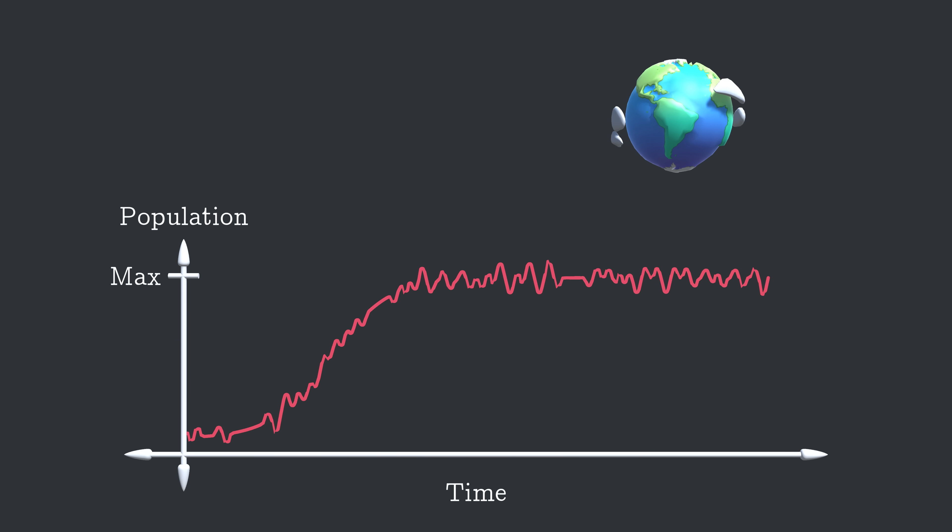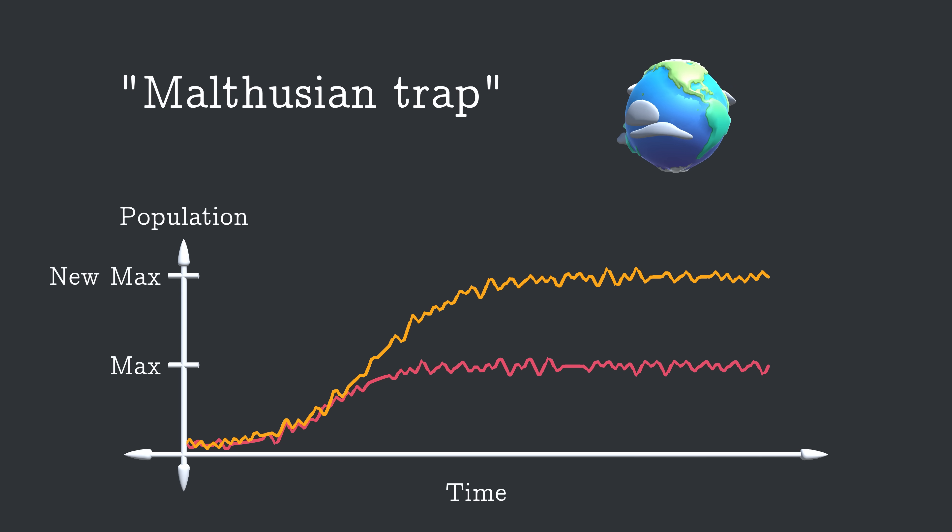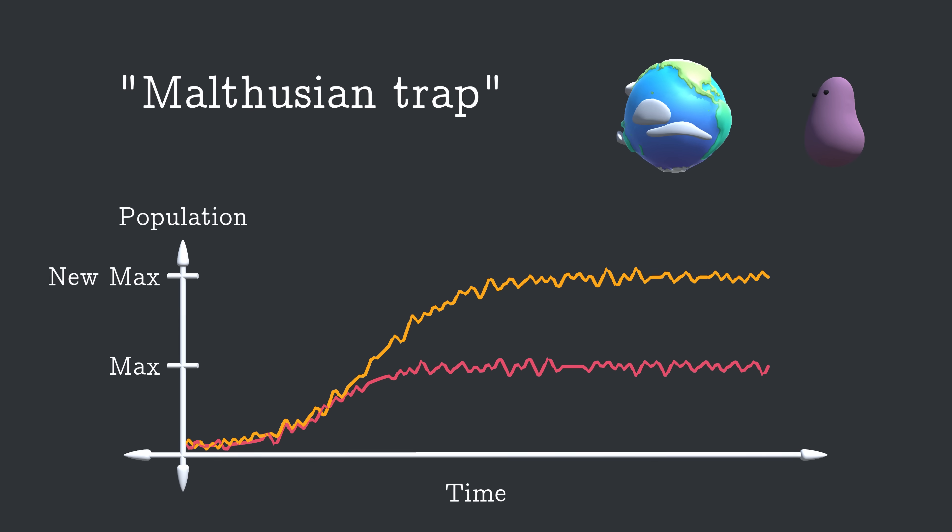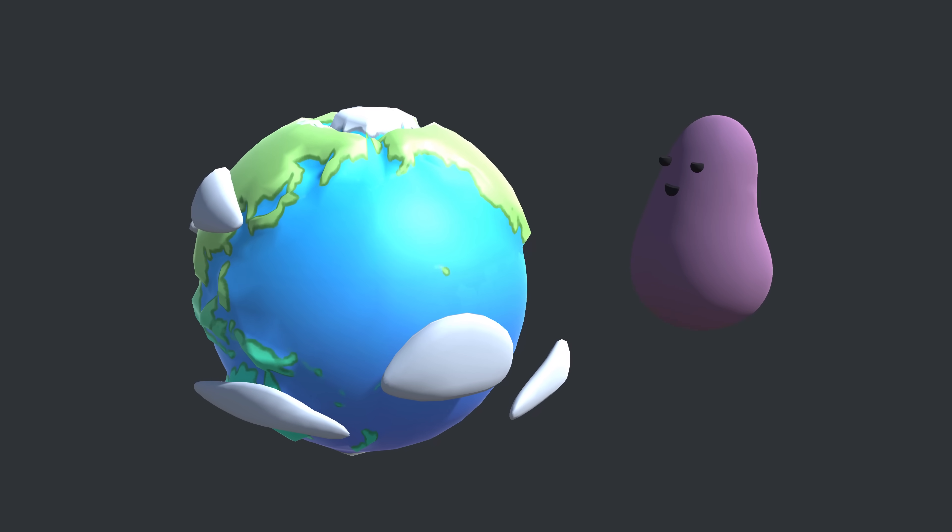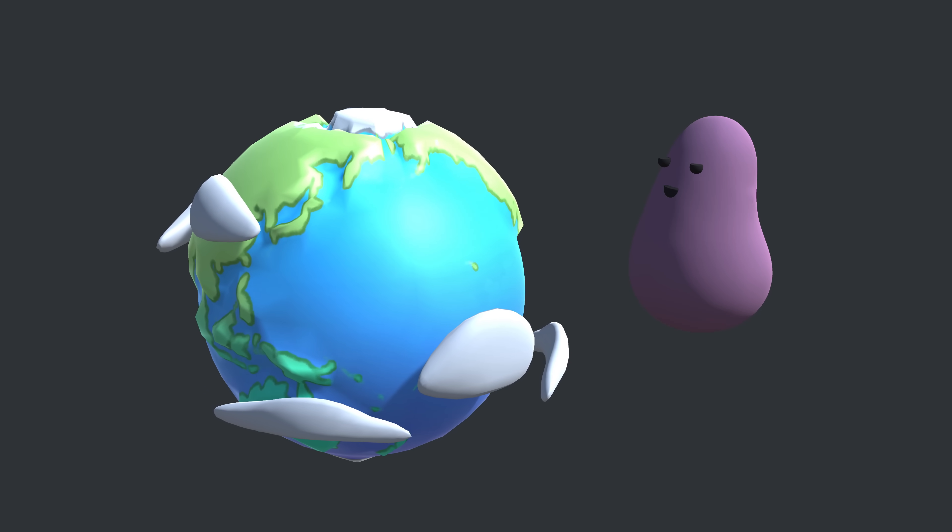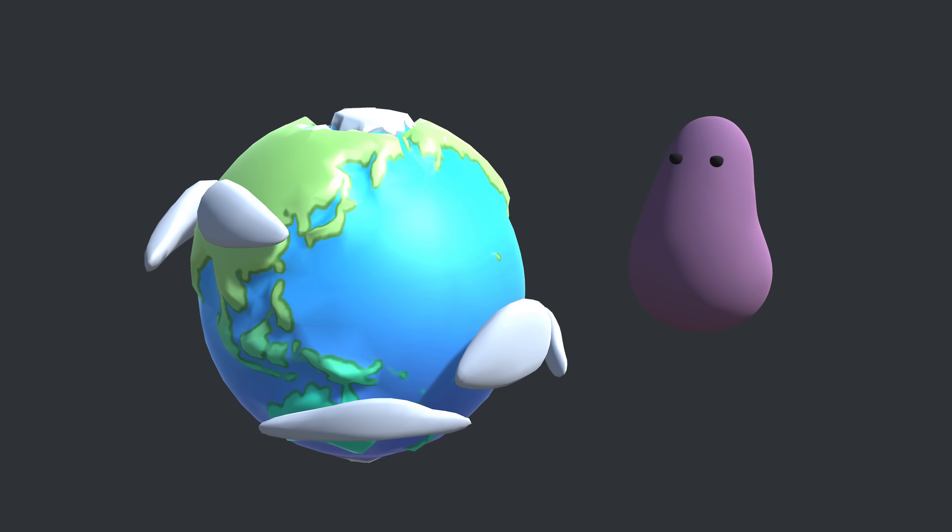Even if technology improves to let us support more life per resource, that would just increase the limit, not get rid of it. This is known as the Malthusian Trap. It's a grim picture. So grim, someone might wish they could just snap their fingers and cut the population in half to avoid all that ugliness. But fortunately for us, we don't seem to be headed in that direction.